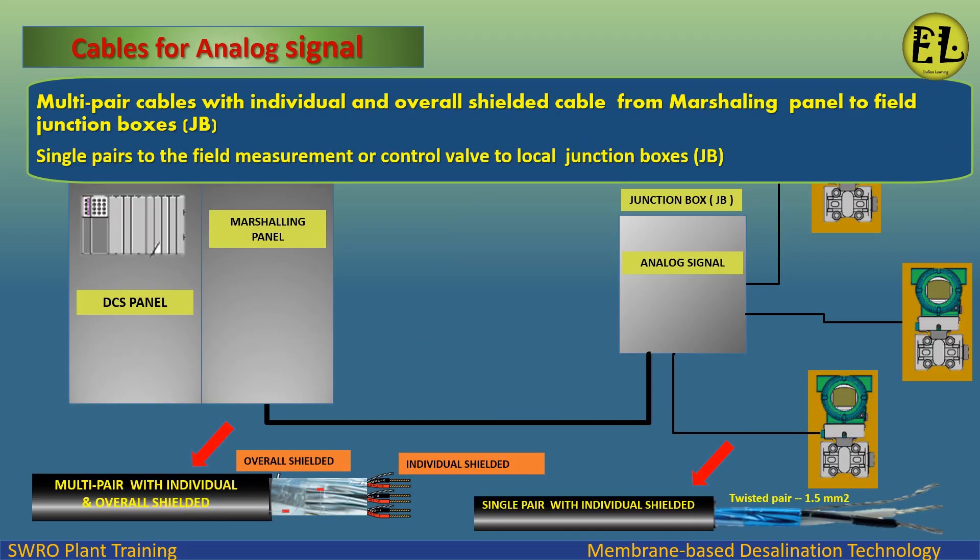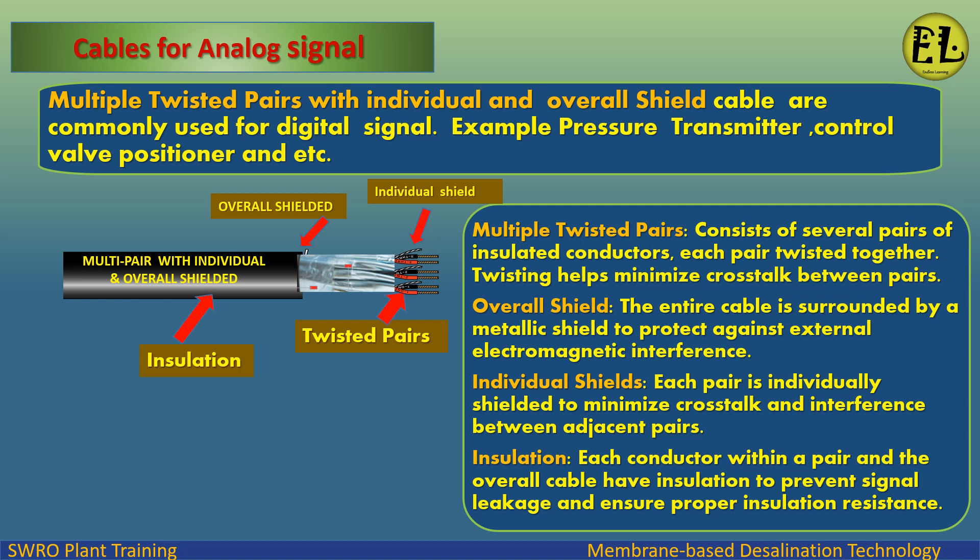For analog signals, multi-pair cables with individual and overall shielded cable are used from the marshalling panel to field junction boxes, and single pairs are used from the field measurement or control valve to local junction boxes. Examples include pressure transmitters and control valve positioners. Multiple twisted pairs consist of several pairs of insulated conductors, each pair twisted together.